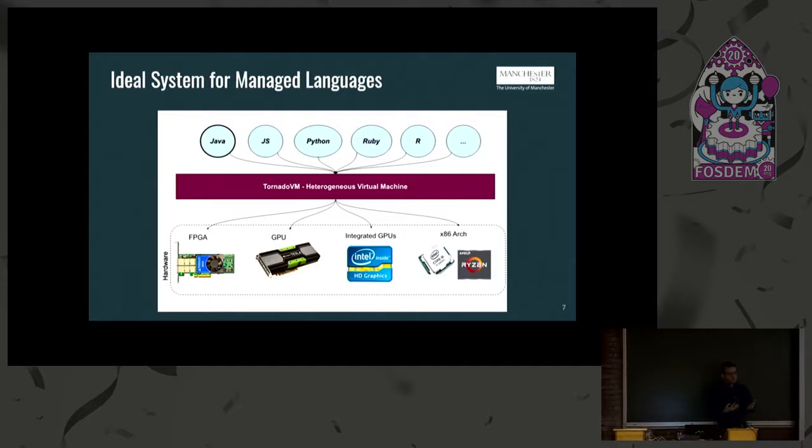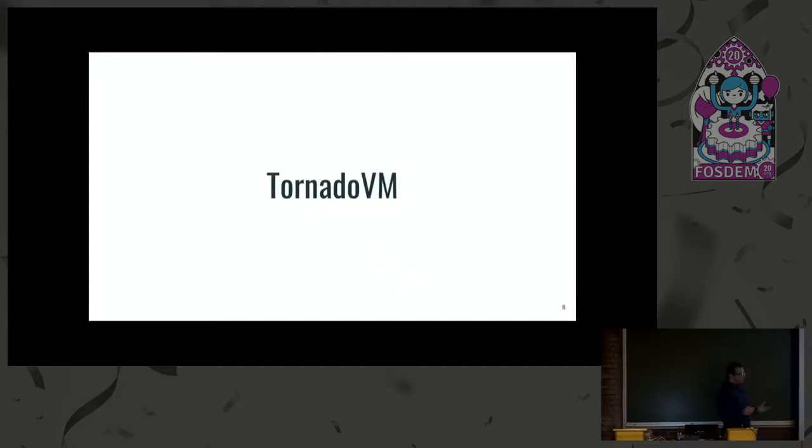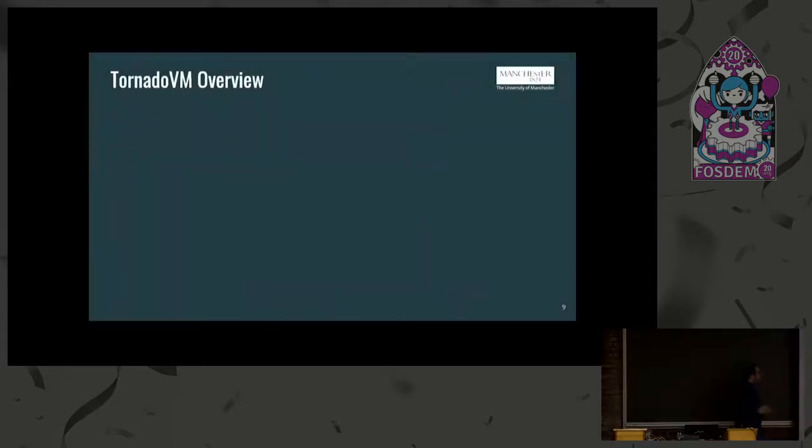Let's have a look at the insights of TornadoVM. I will present you the software stack in a top-down order. So let's start with the API. Tornado currently doesn't detect parallelism, so it relies on the programmer to specify that this method could be ideal for acceleration on a GPU, and this is done by exposing our API. Basically our API is a task-based API. A task is a representation of a method that could be offloaded on the FPGA or the GPU, and we can have a group of tasks, a group of methods that could be offloaded and executed on the hardware in sequence.